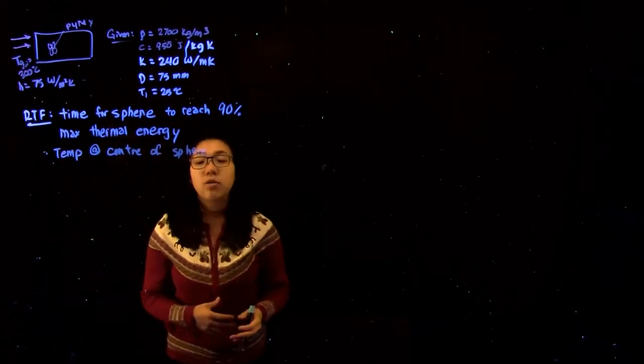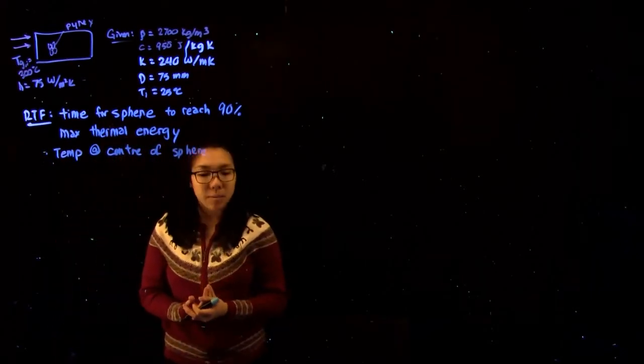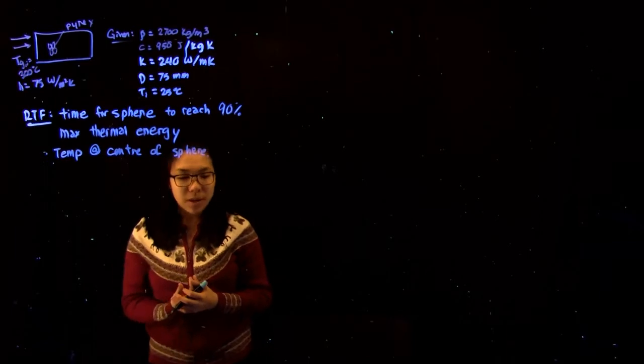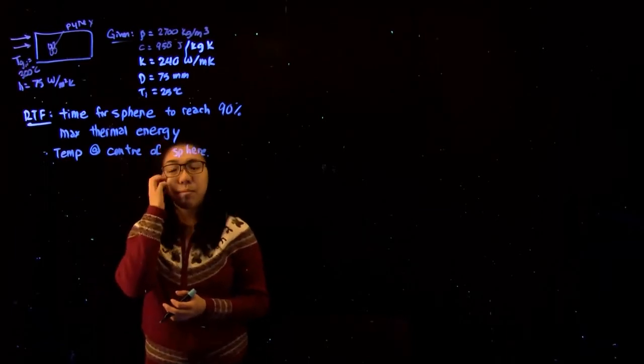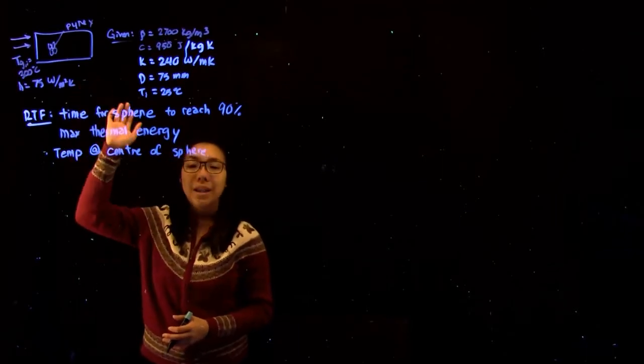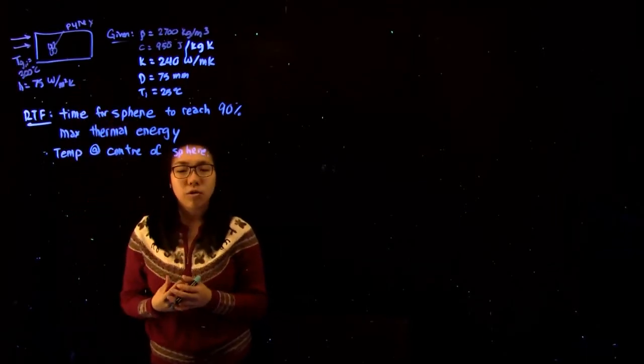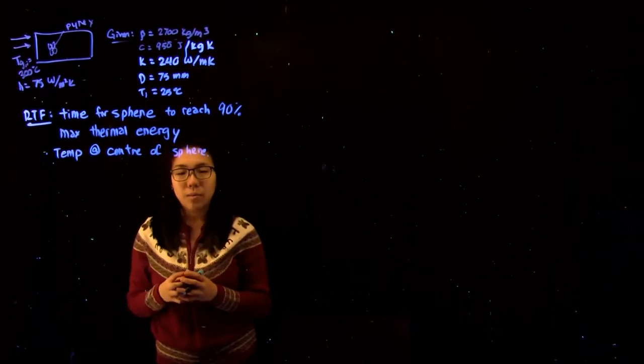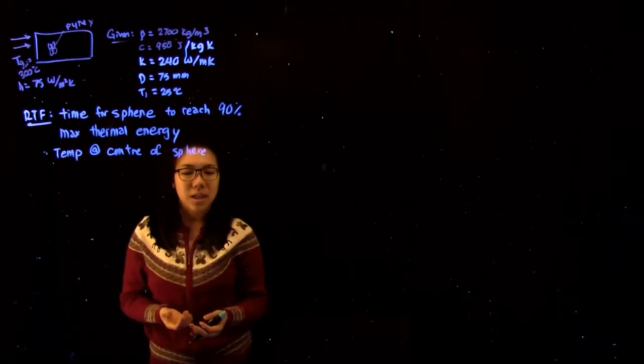So the first thing we want to do for any transient problem is find the Biot number, because if this number is less than 0.1, then we can greatly simplify the entire problem because we're saying that at any given time, the temperature gradient within the sphere is basically negligible.